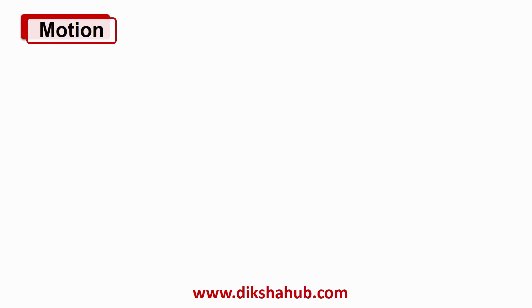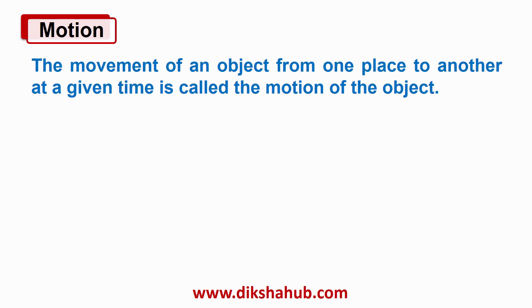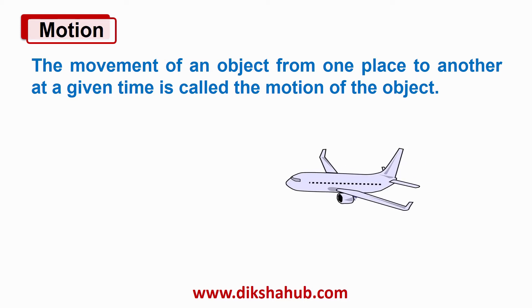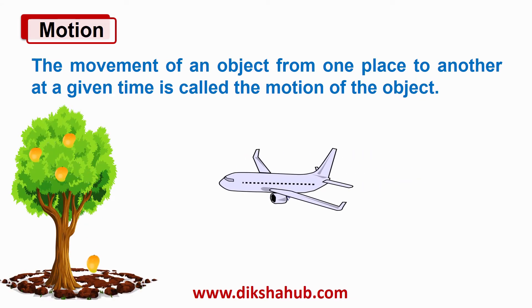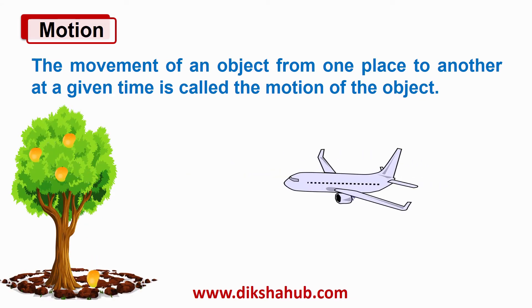From the above discussion, we will define motion. The movement of an object from one place to another at a given time is called the motion of the object. Examples include the motion of an aeroplane, and the motion of a fruit falling from a tree.